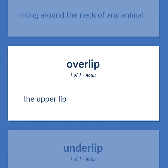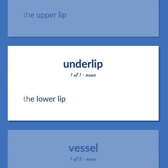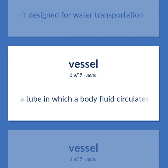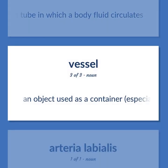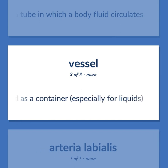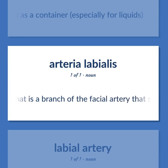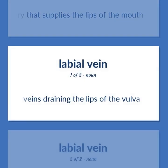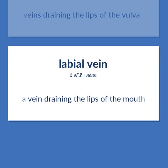Lip anatomy and vessel: The upper lip. The lower lip. A craft designed for water transportation. A tube in which a body fluid circulates. An object used as a container, especially for liquids. An artery that is a branch of the facial artery that supplies the lips of the mouth. Veins draining the lips of the vulva. A vein draining the lips of the mouth.